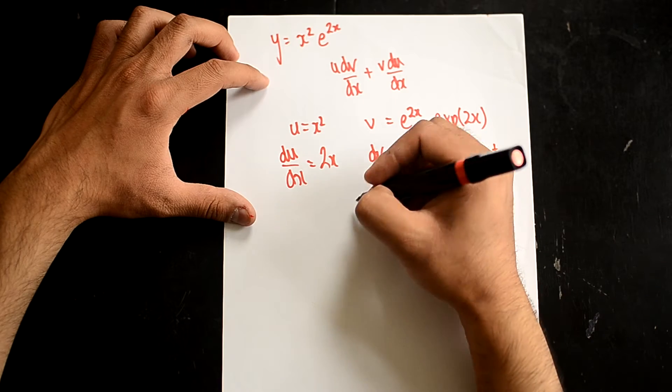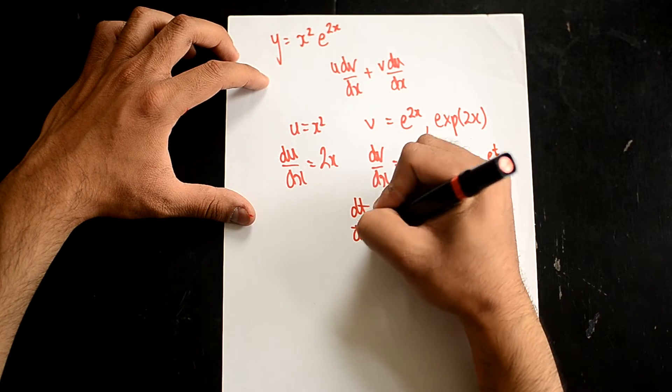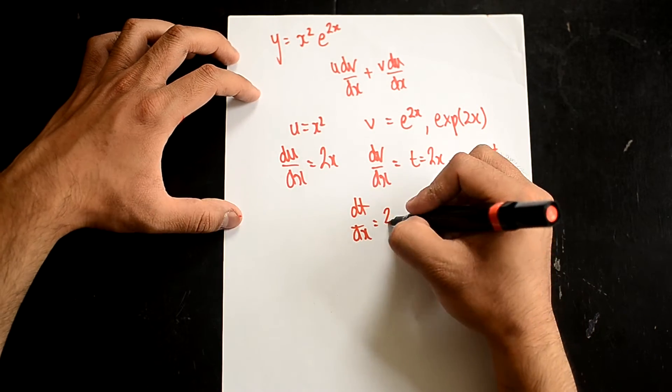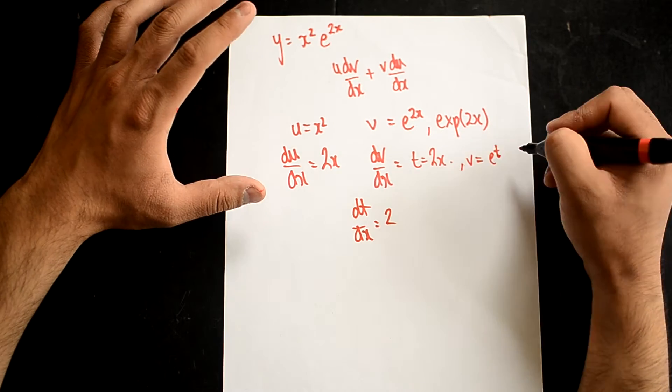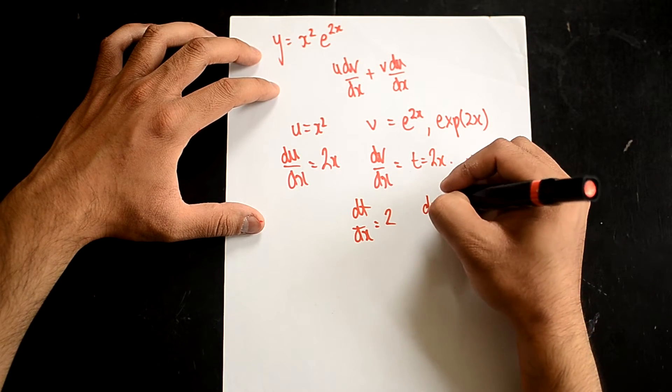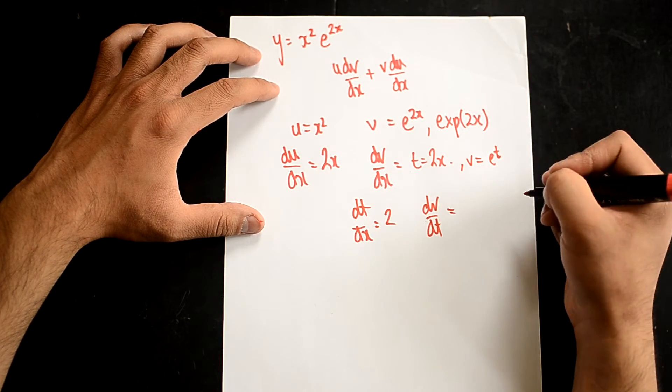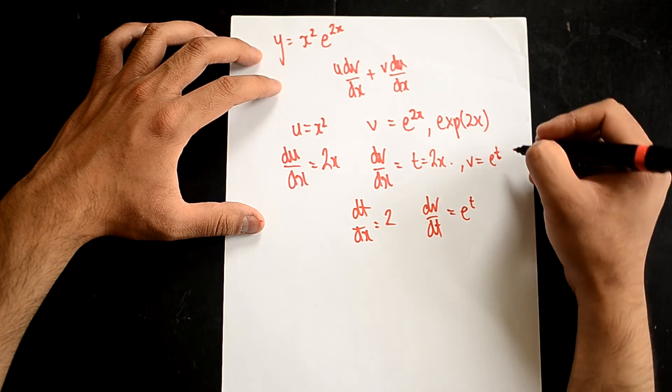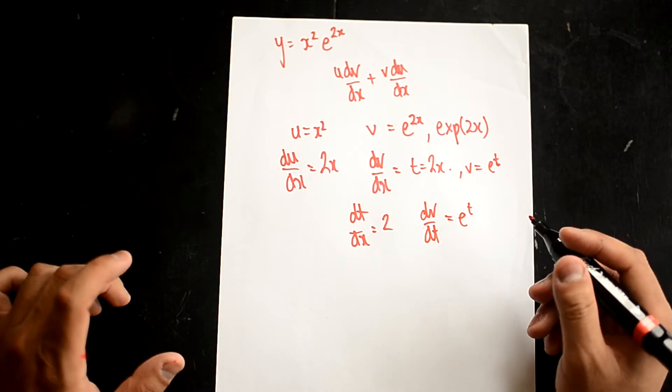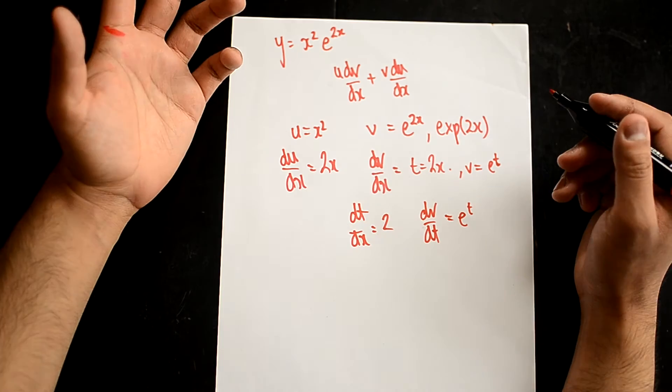So, now let's do dt by dx. So, differentiate this, which would be 2. And let's differentiate dv by dt. Now, dv by dt is actually e to the t. The differential of an exponential is itself, really.